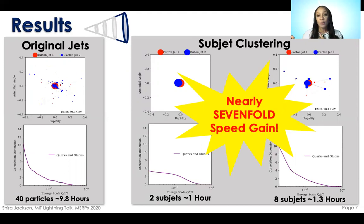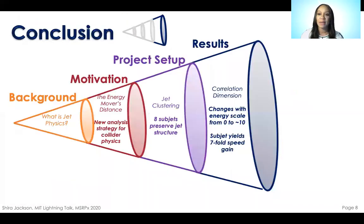If we try to approximate the EMD with more than eight subjets, we actually get the original fractal-like structure preserved. So we don't need to use more than eight subjects to approximate the EMD.